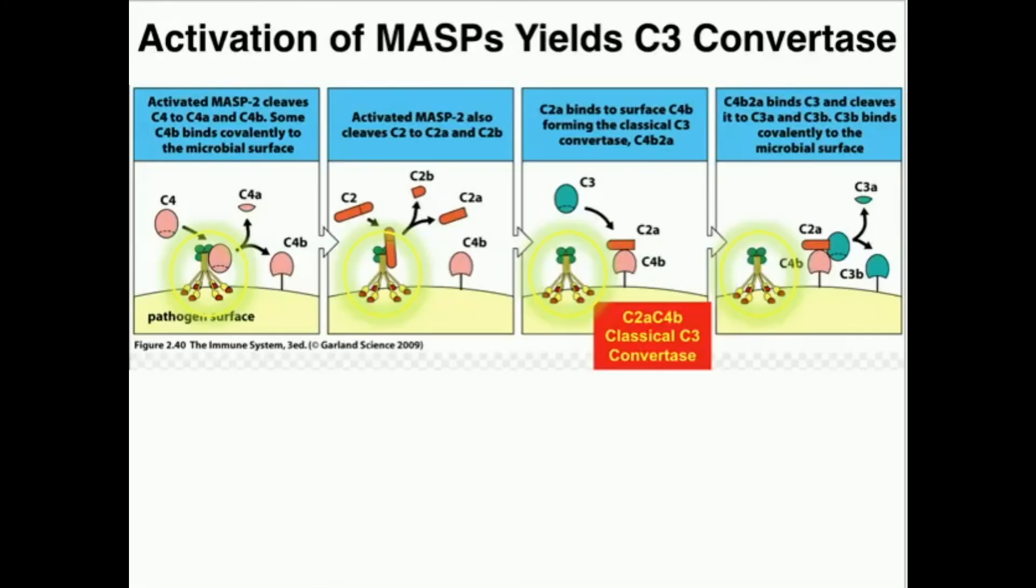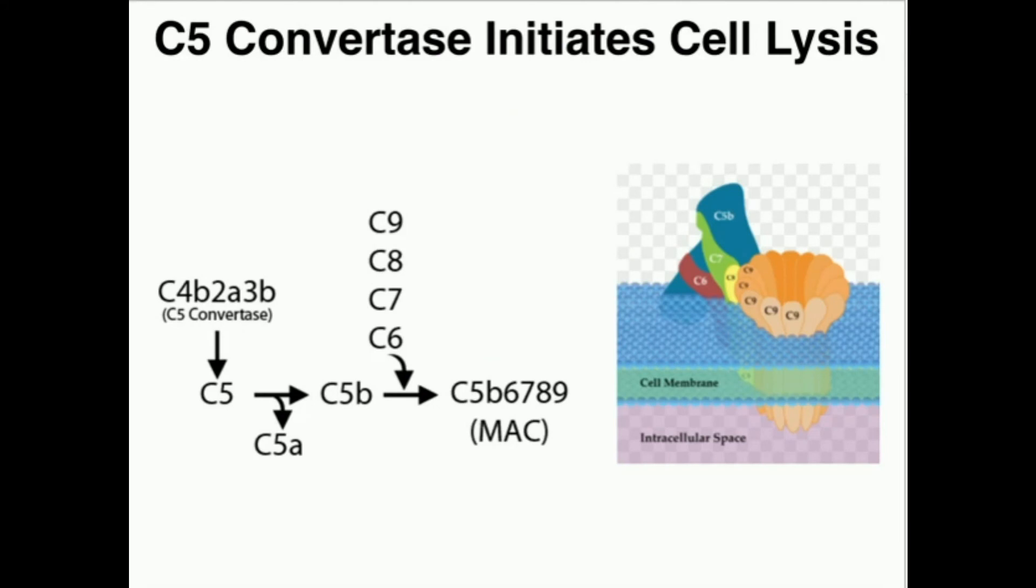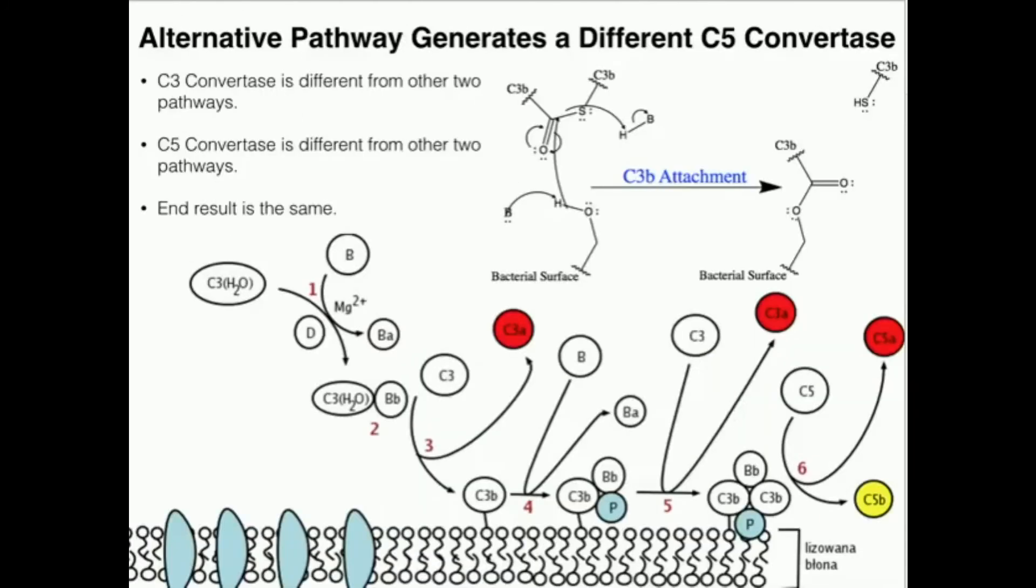We're going to cover this in the next video, but I want to start off by just introducing it. We had a bunch of complement proteins, right? We had C4, C2, C3, and C5. They were split into A and B components. And in general, the B proteins remain bound. According to the new system of nomenclature, we would say C4B, C2B, C3B, and C5B remain bound. The ones that float away are C4A, C2A, C3A, and C5A, according to the new system of nomenclature.